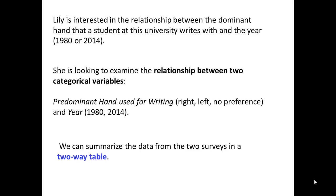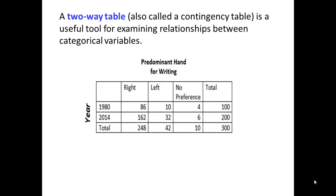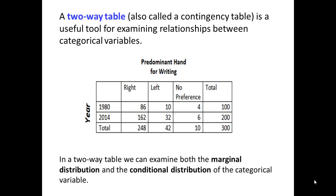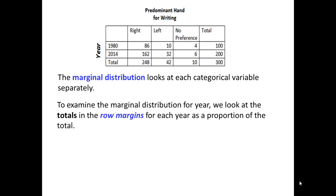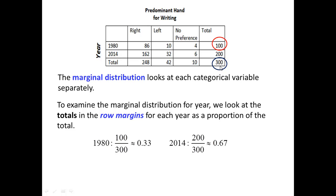We can summarize the data from the two surveys in a two-way table. A two-way table, also called a contingency table, is a useful tool for examining relationships between categorical variables. In a two-way table, we can examine both the marginal distribution and the conditional distribution of the categorical variable. The marginal distribution looks at each categorical variable separately. To examine the marginal distribution for year, we look at the totals in the row margins as a proportion of the total. For 1980, we have 100 out of 300, or 0.33, and for 2014 we have 200 out of 300, or 0.67.